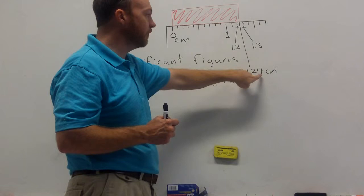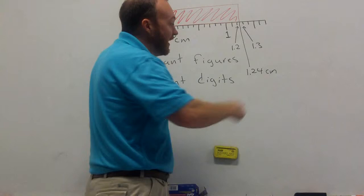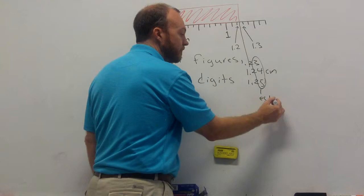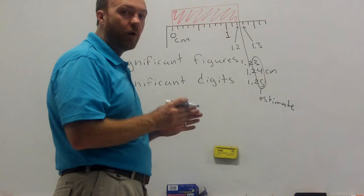However, I am not perfectly sure this is a 4. Maybe it is halfway between and it should be 1.25. Maybe it's not quite as far as I thought and it should be 1.23. But this last digit that we measured is an estimate. Any time you make a measurement, you should always have one estimated digit.